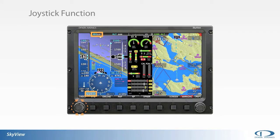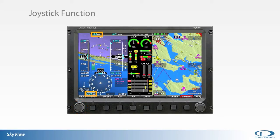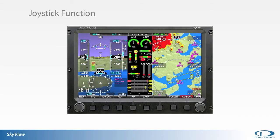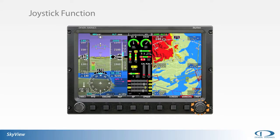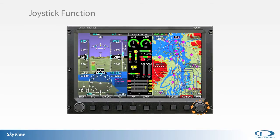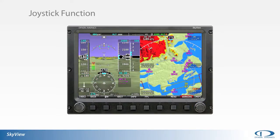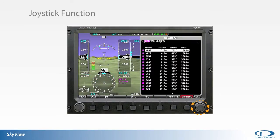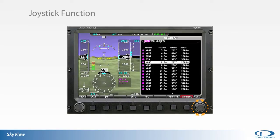White boxes appear around the associated function on the primary flight display, and the background of the associated box also changes as values are changed through rotation of the knob. With the map displayed, the joystick nearest the map is automatically assigned to map functions — rotating the assigned map knob changes the map range. Within various map, flight planning, and information menus, rotation of the knob will scroll the cursor up or down through the displayed list.